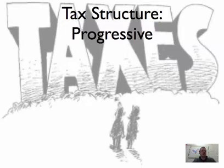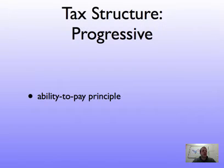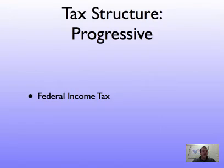The next type of tax structure is a Progressive Tax Structure. A progressive tax structure takes a larger share as income increases. Progressive tax structures are based heavily on the ability to pay principle from Chapter 12, Section 2 — those that can pay more do pay more. A good example of this is our federal income tax. Some people have suggested we should switch to a proportional or flat tax, but currently we use a federal income tax that is progressive.